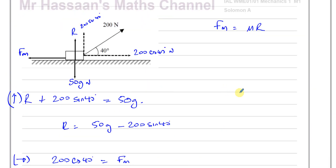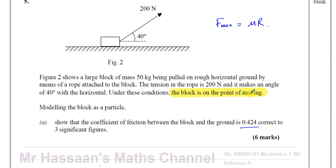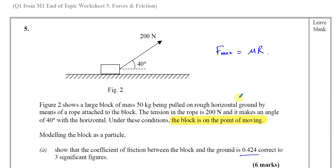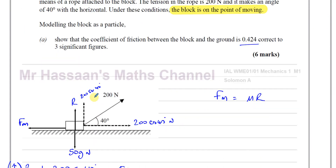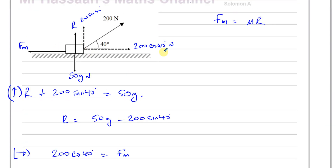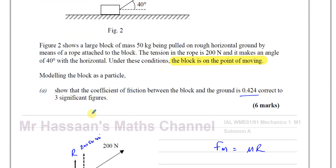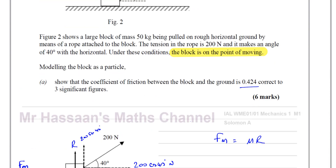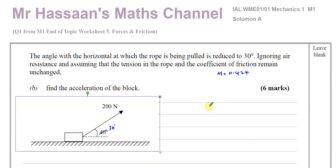That's the answer to part A. The key phrase is 'the block is on the point of moving', meaning it's in equilibrium, so the friction equals the horizontal force component, and the friction has reached its maximum value given by μ times R.